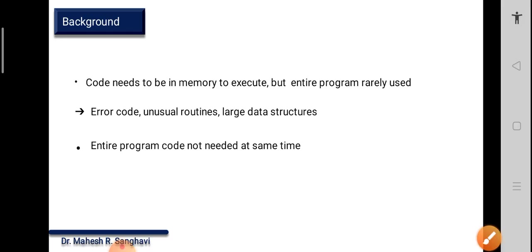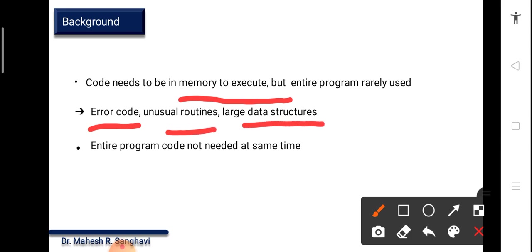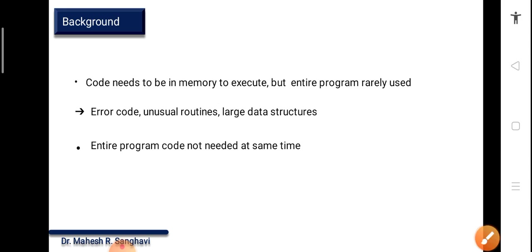Let's see the background of virtual memory. When we talk about code needing to be in memory to execute — whenever we want to run any program which is stored on hard disk, we need to bring it into memory. A portion of that code cannot be used, for example error codes, unusual routines, or large data structures. So the entire code is not loaded at a time. The entire program may not be needed at the same time.